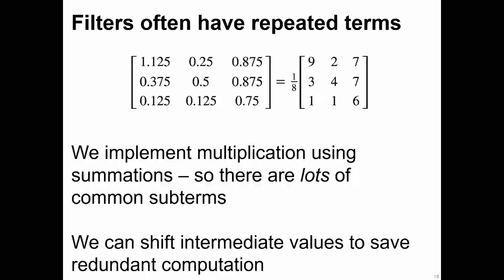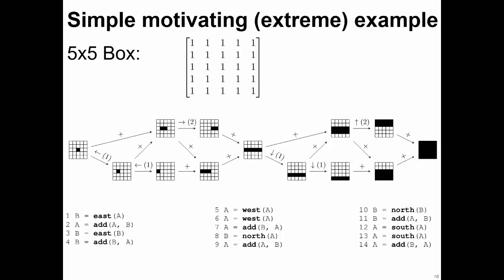Convolutional filters often have very repetitive terms in them, and especially when applying the filter on the whole image simultaneously using massive parallelism — which is what we do — there are many repeated terms in the computation we can reuse. Additionally, since we're doing this approximation using sums of sub-terms, we can reuse even more terms in the process. There's really a lot of opportunity for reuse. As a motivating example, here is the computational graph our method produced for an unscaled 5×5 box filter.